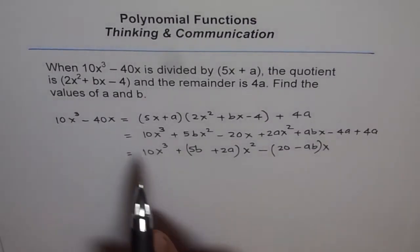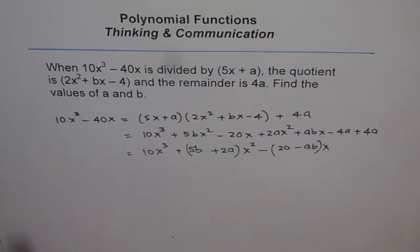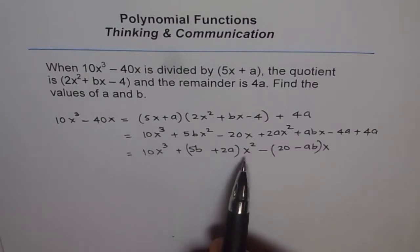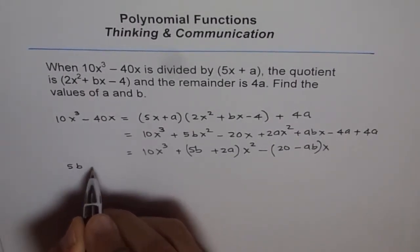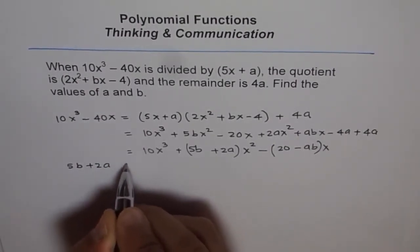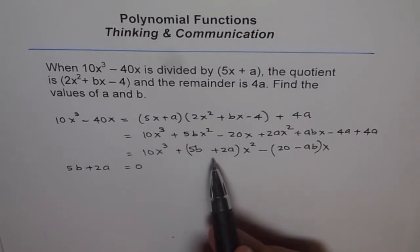Now clearly if this has to be equal to this, then their coefficients should be equal. 10 and 10 are equal, perfect. We are interested in finding two variables, we need two equations. Until we get two equations, we can't really solve. Now x² coefficient is what here? 0. So what we can do is use this as an equation. 5b + 2a equals to 0 because there is no x² term here and there is one in the right hand side. So that should be 0.